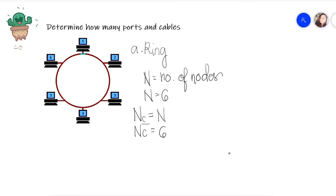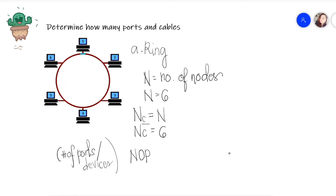Next, we find the number of ports per device — we'll use NOP. For ring topology, each node has two ports: one on the left side and one on the right side. So the number of ports per device is two.